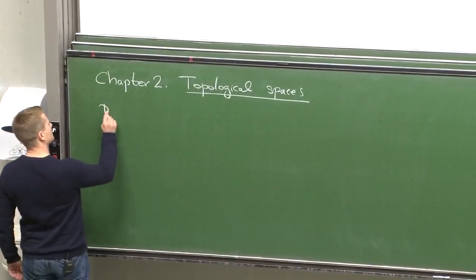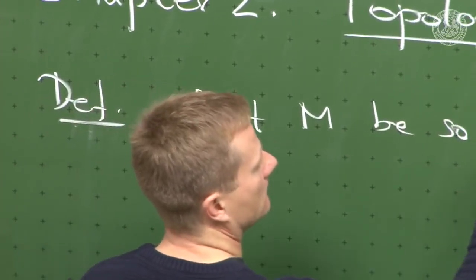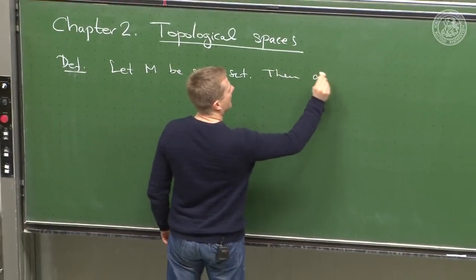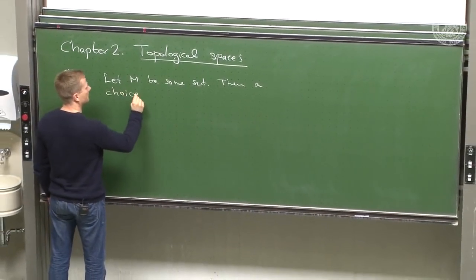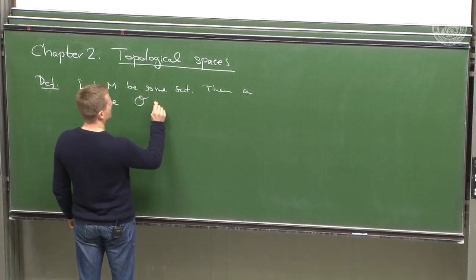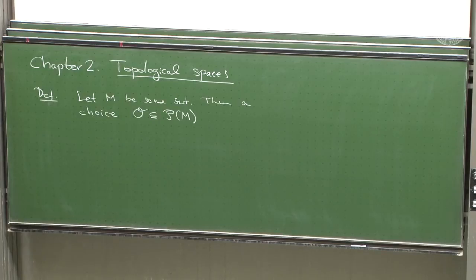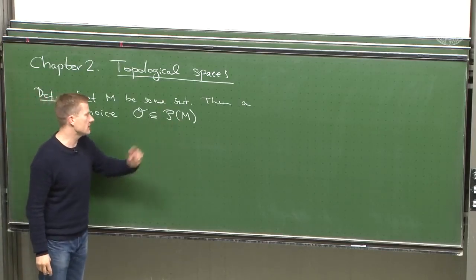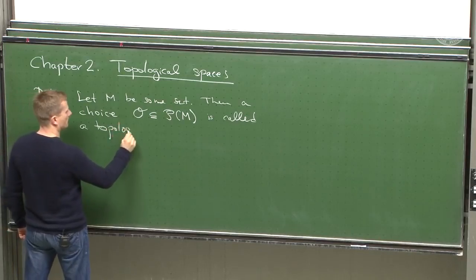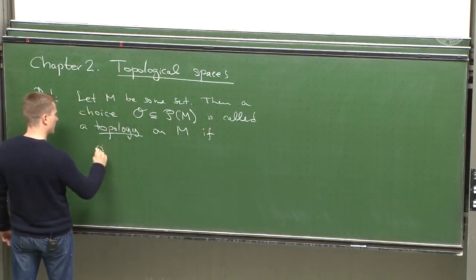So the definition of a topological space is as follows. Definition: let M be some set — and we know what a set is from axiomatic set theory. Then a choice — and this choice is called curly O — is a subset of the power set of M. It could be the entire power set. So a choice of subset O of the power set of M is called a topology on M if three axioms or conditions are satisfied.